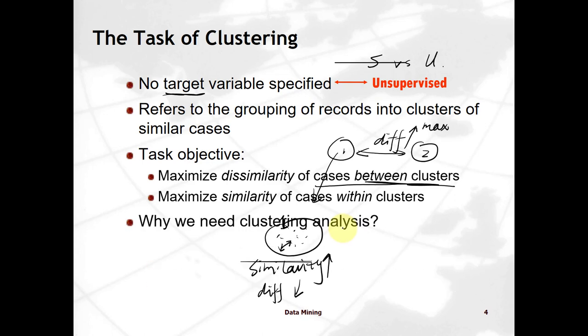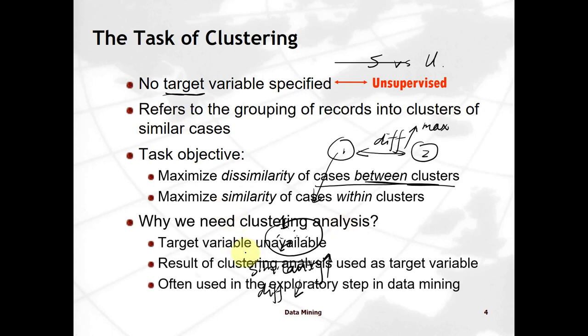Why do we need clustering? Sometimes we don't have the target variable — it's unavailable. And sometimes the target variable is not of high quality. You can come up with an alternative target variable by using the clustering algorithm. Clustering does provide unique information about groups, and even when a defined target variable exists, clustering can answer a slightly different question and provide useful additional information.